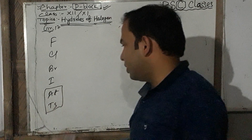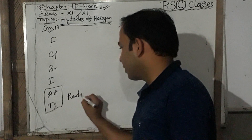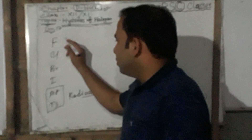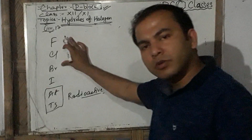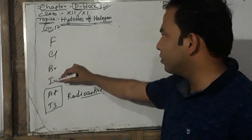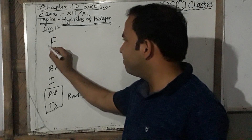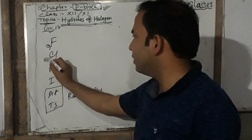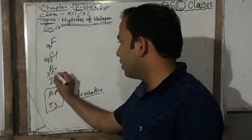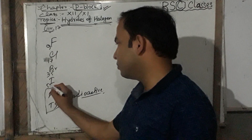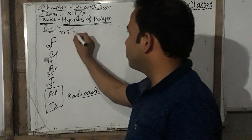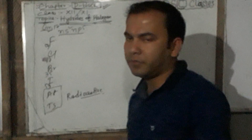The atomic numbers are: fluorine — 9, chlorine — 17, bromine — 35, and iodine — 53. The general electronic configuration of Group 17 elements is NS2 NP5, meaning the outer shell has 7 electrons.